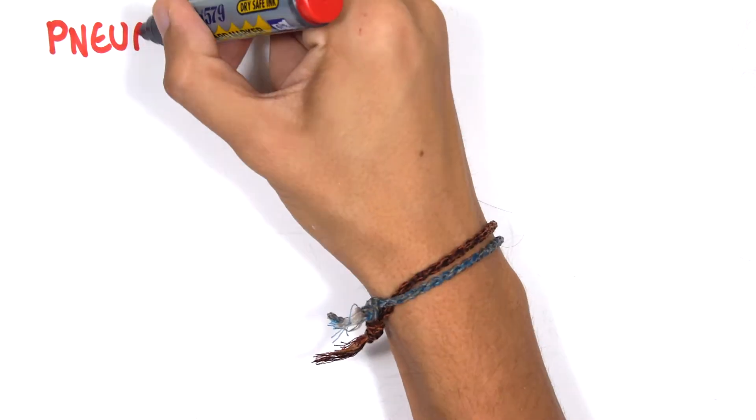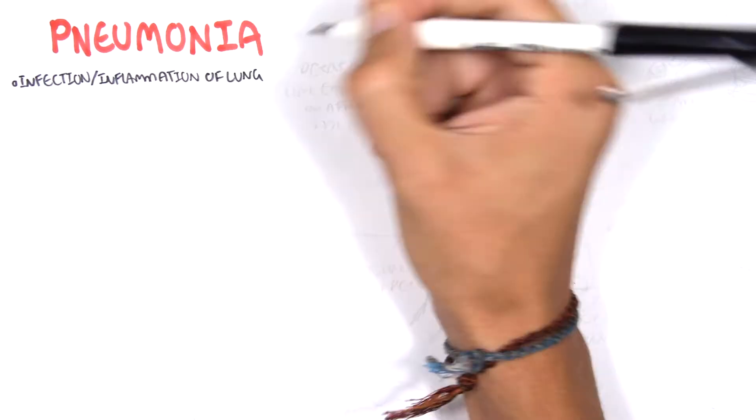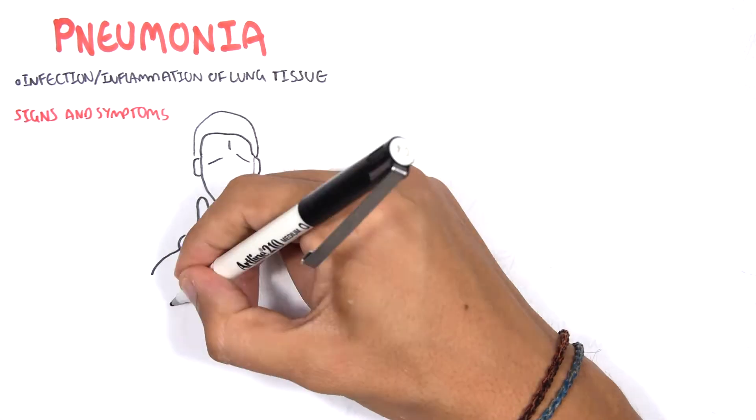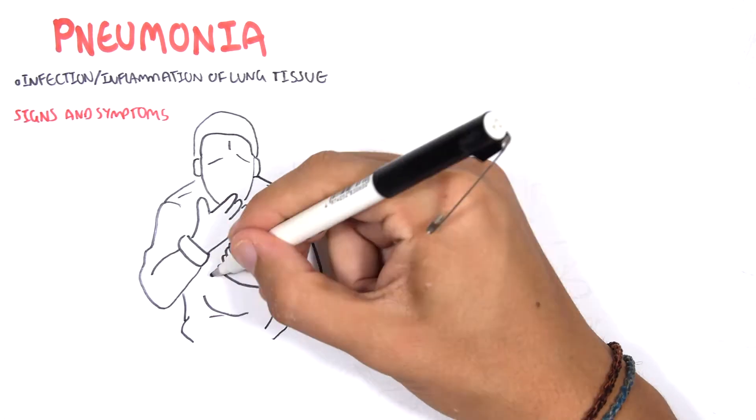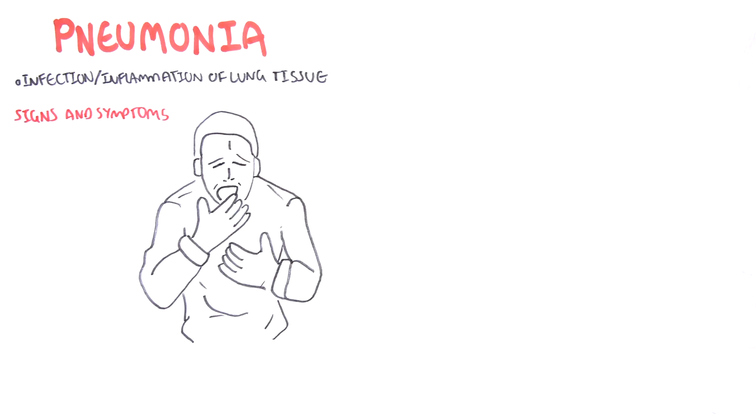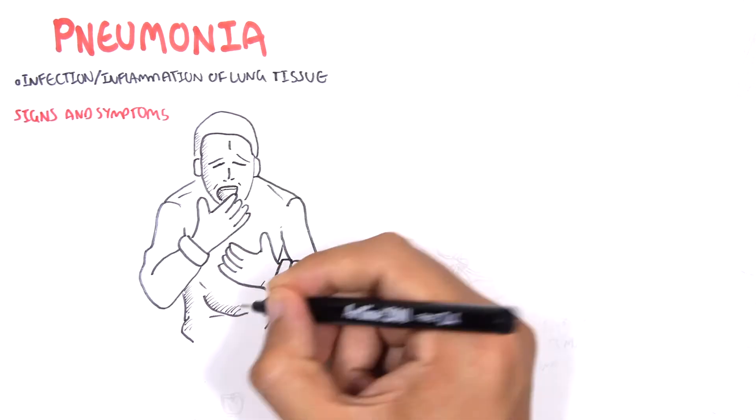In this video we're going to look at pneumonia. This is an overview, an introduction. Pneumonia is an infection and inflammation of lung tissue caused by a variety of pathogens including bacteria, virus and fungi.